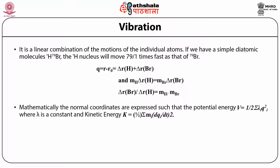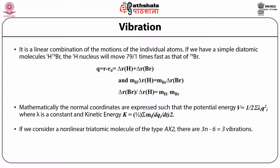Mathematically, the normal coordinates are expressed such that the potential energy V = (1/2) * sigma(lambda_i * Q_i^2), where lambda is a constant, and kinetic energy K = (1/2) * sigma(M_i * (dQ_i/dt)^2). If we consider a non-linear triatomic molecule of type AX2, there are 3×3 minus 6 = 3 vibrations. All 3 atoms vibrate with the same frequency in a normal mode. The example for an AX2 type is the water molecule with chemical formula H2O.